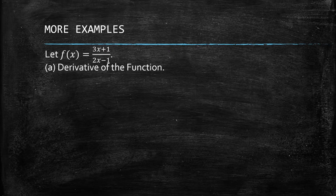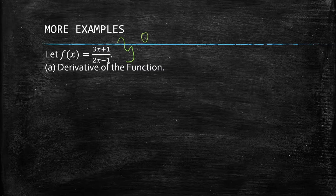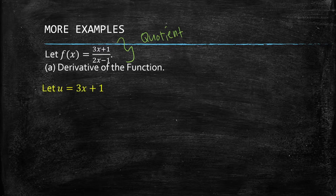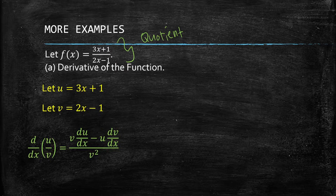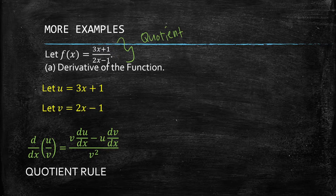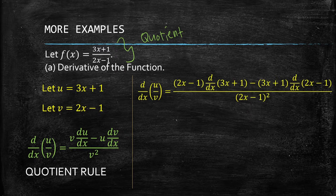For the derivative of the function, take note that we have a quotient. Since this is a rational function, we're going to apply the quotient rule. We let u be 3x + 1 and v be 2x - 1, because we're going to apply the rule: v du minus u dv, all over v squared.